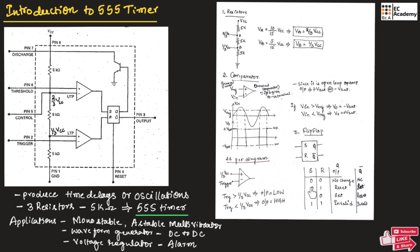When S=0 and R=1, output is reset, meaning Q is low and Q-bar is high. When S=1 and R=0, output is set, meaning Q is high and Q-bar is low. If we understand the working of these three components, we can easily understand the working of the 555 timer.